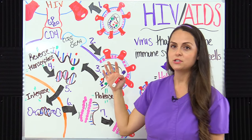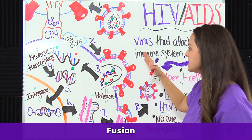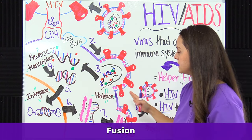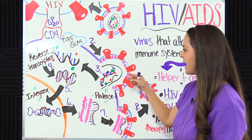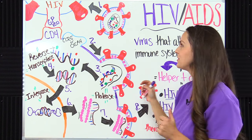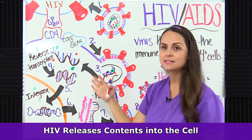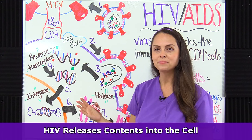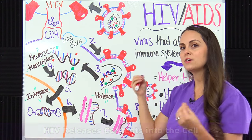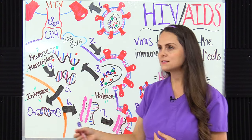The next step is fusion. HIV is going to fuse itself with the helper T cell, and whenever it does that, it takes its suitcase — its contents — and dumps them inside the cell. The whole goal is to set up shop and take over that cell.